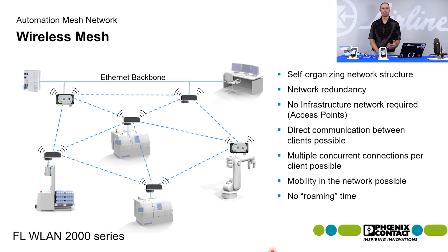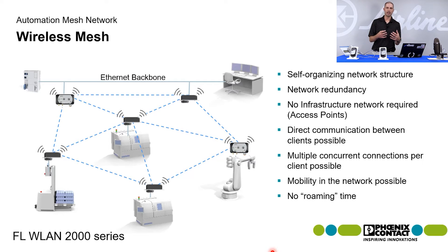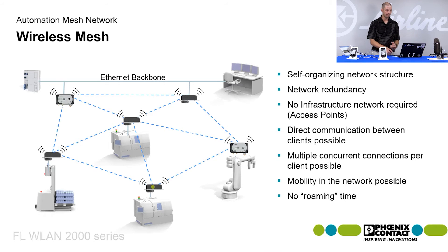When this mesh network is created, all the nodes pass data back and forth to each other, telling them: I have this connection to this node, the signal strength is this, I have this many paths. And that way, data can be routed accordingly where it's needed.